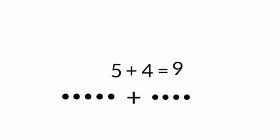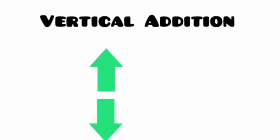So five plus four is equal to nine. Now let's learn about vertical addition. We will learn how to add the numbers vertically, which means top to bottom. We will write one number on the top and the other number below it.